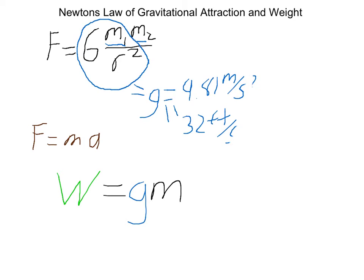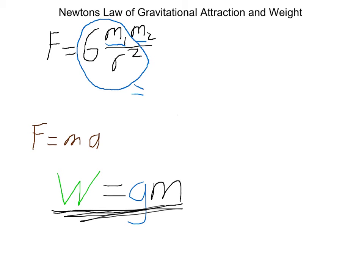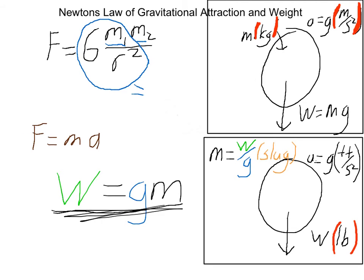I'll quickly erase this to make some more room. Now I'm going to show how the SI system versus the FPS or English system differ on how they use these units. Now we have these two objects with weights. In the SI we have a weight, which equals mass times gravity. Gravity is acceleration, which is in meters per second squared, and mass is in kilograms. So it's pretty simple.